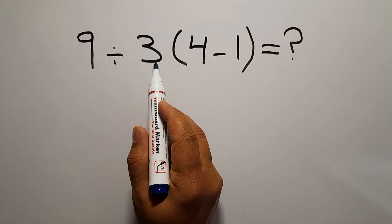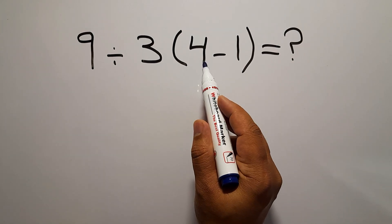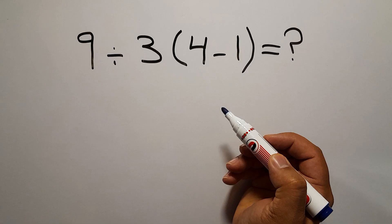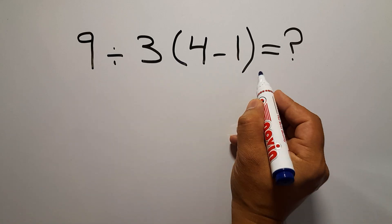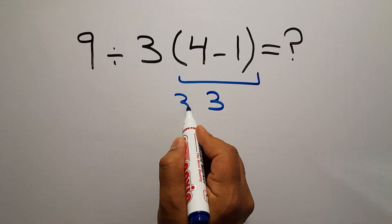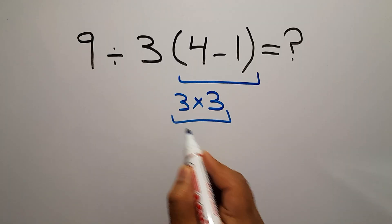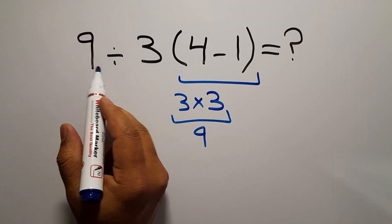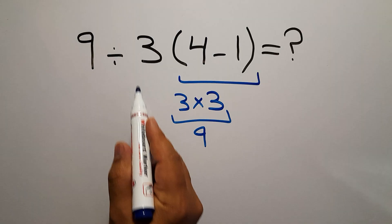9 divided by 3, then times 4 minus 1. 4 minus 1 gives us 3, and 3 times 3 equals 9. We have 9 divided by this...